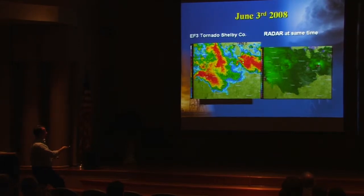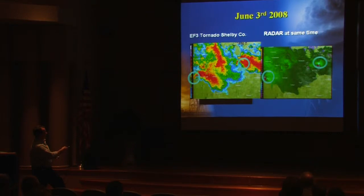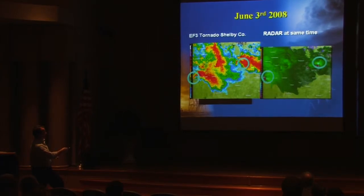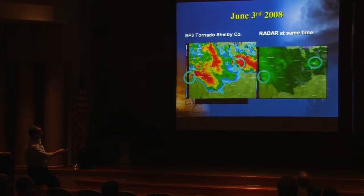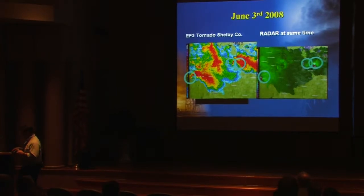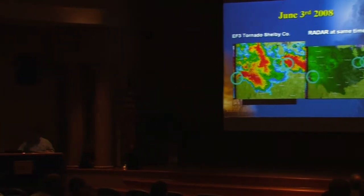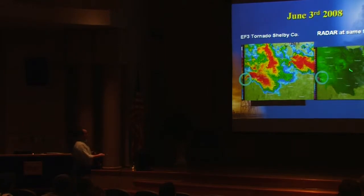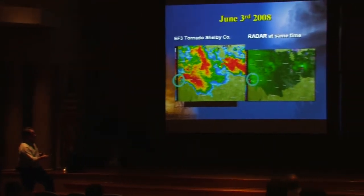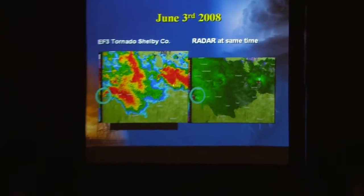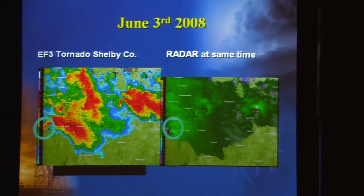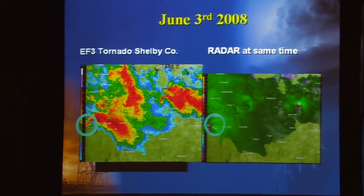That's this hook segment right here. This notching that you see right here is representative of where the rotation center is. This one was not real strong and was just beginning to develop. But by the time this storm moved over to the northeast of Greensburg, right up there to the northeast, it produced a little EF-1 tornado.